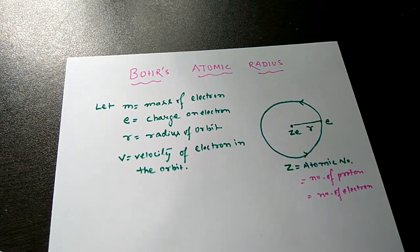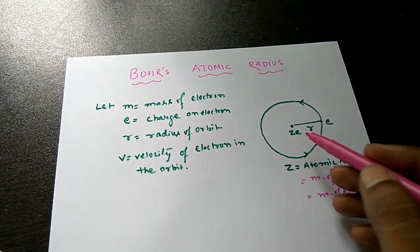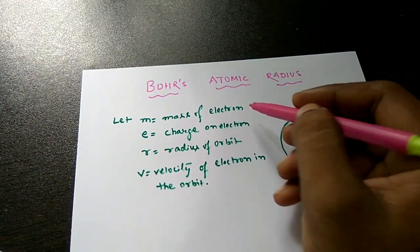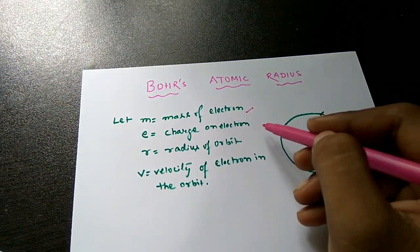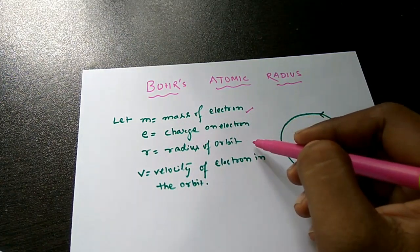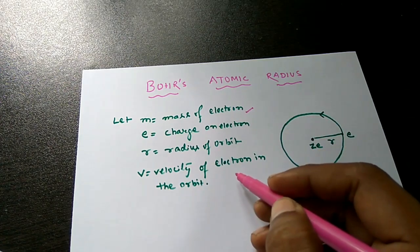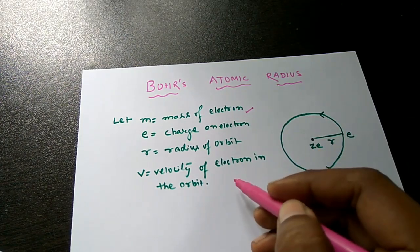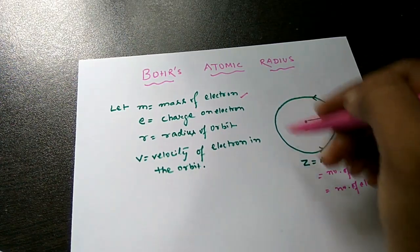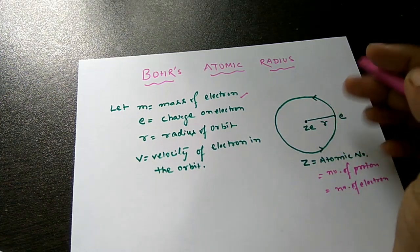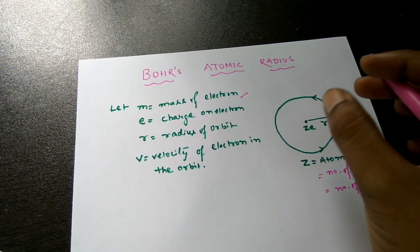Here, M represents the mass of the electron, E represents the charge on the electron, R is the radius of the orbit, and V is the velocity of the electron in that orbit. Since the electron is moving in a circular path, there must be a centripetal force acting on it.